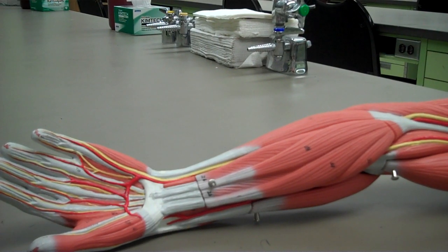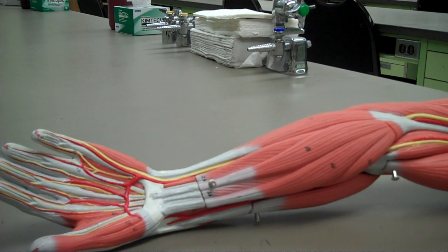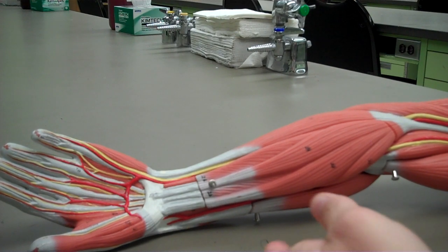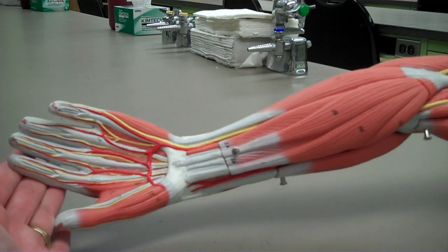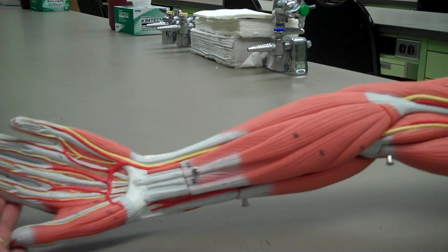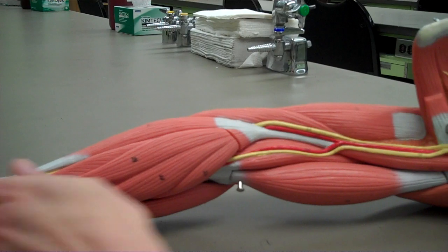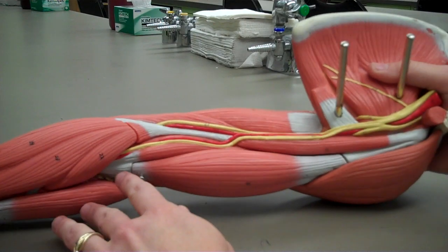I'd like to now cover the muscles that cross the elbow joint and cause flexion and extension of the forearm. To give you an orientation, you're looking at the anterior aspect of the forearm, and I'm going to move superiorly to begin our discussion.